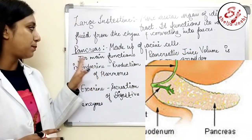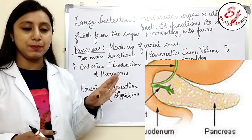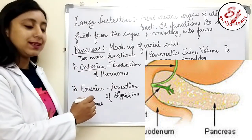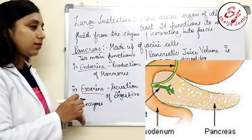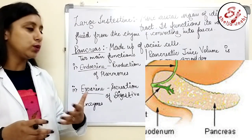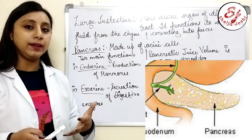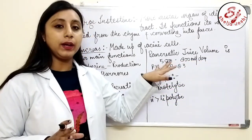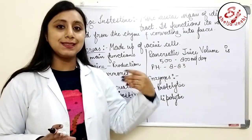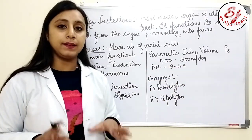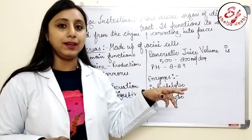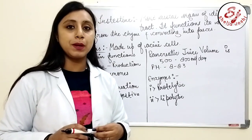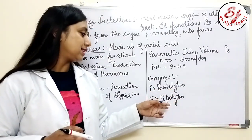There are some accessory organs. The first is the pancreas, which is made up of acinar cells. The two main functions of the pancreas are endocrine and exocrine. The main endocrine function is to produce hormones, and the main exocrine function is to secrete digestive enzymes. About 500 to 800 ml of pancreatic juice is secreted per day. The pH of pancreatic juice is 8 to 8.3, meaning it is highly alkaline. The enzymes produced by the pancreas include proteolytic and lipolytic enzymes.